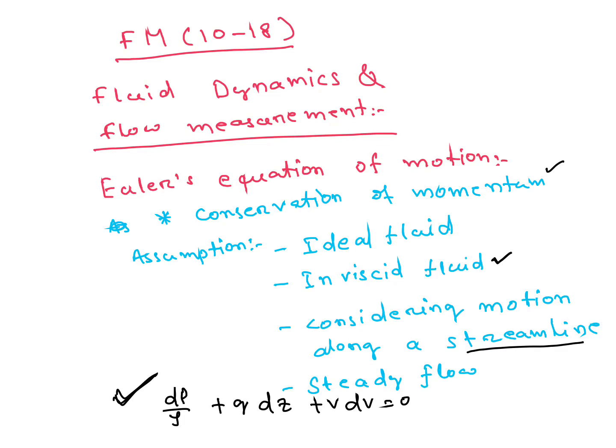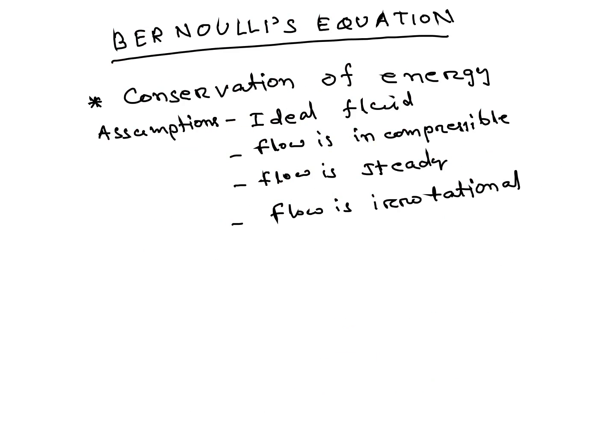Then Bernoulli's Equation. Bernoulli's Equation is Conservation of Energy. Its assumptions are Ideal Fluid and flow is incompressible, flow is steady, and flow is irrotational. If you integrate Euler's Equation of Motion, you will get Bernoulli's Equation.